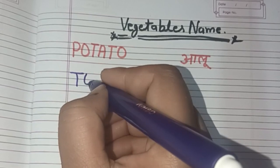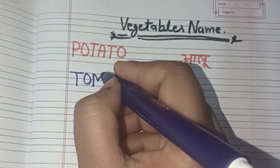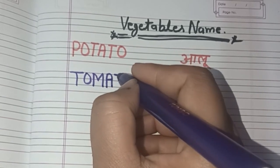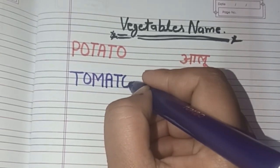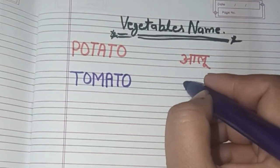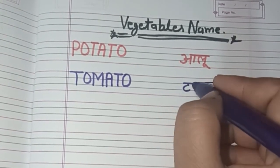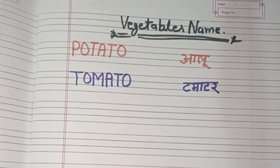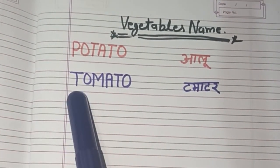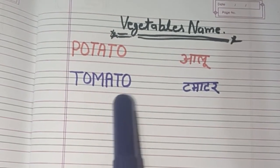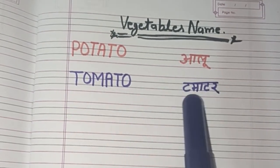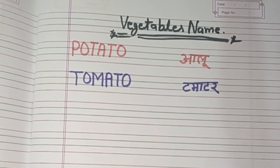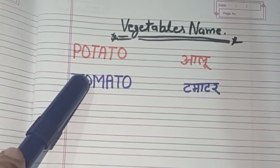T-O-M-A-T-O. Tomato! Tomato means Tamatar. Bolo — T-O-M-A-T-O, Tomato, Tomato means Tamatar.